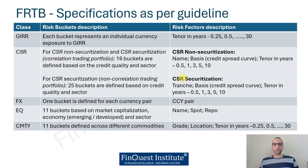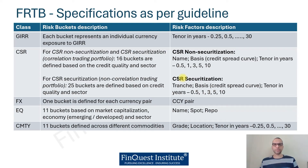For the non-correlation trading portfolio, CSR for securitization is grouped across 25 buckets based on credit quality and sector. The risk factors depend on the issuer name, the basis, the credit spread curve, and the tenor in years spanning from six months to 10 years. For securitization, tranche-specific information is also included, since securitization entails multiple tranches created for a given position.